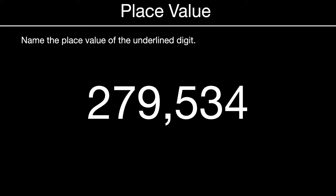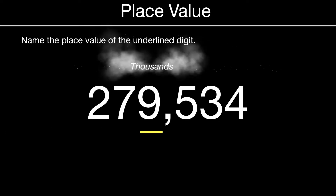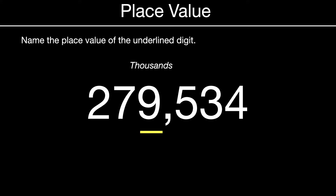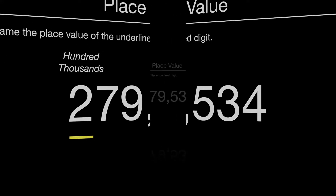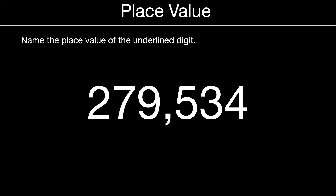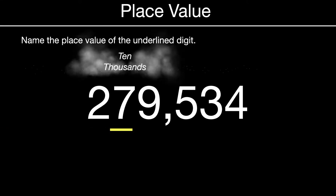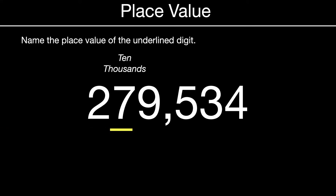Name the place value of the underlined digit. The nine — that's thousands. Name the place value of the underlined digit — the two is in the hundred thousands. Name the place value of the underlined digit — the seven is ten thousands.